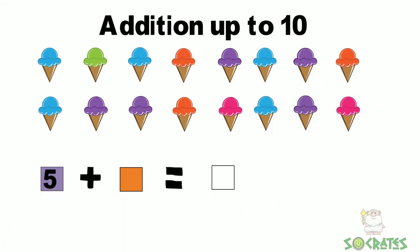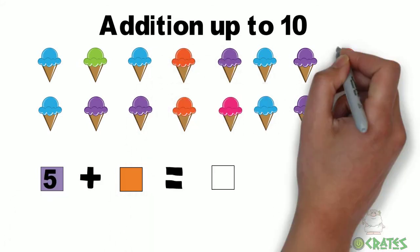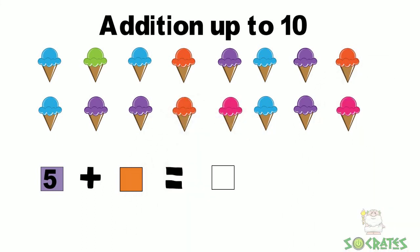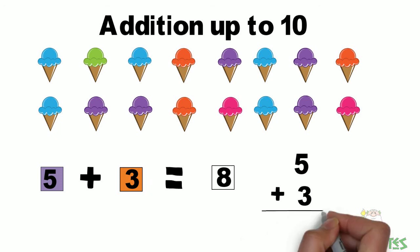We have five purple ice cream cones plus one, two, three orange ice cream cones and that gives us eight ice cream cones all together. We can write it again with a five over a three with a plus symbol and a line equals eight.